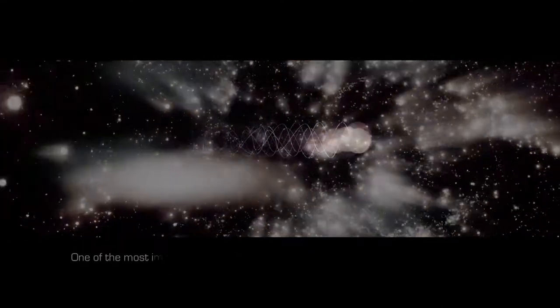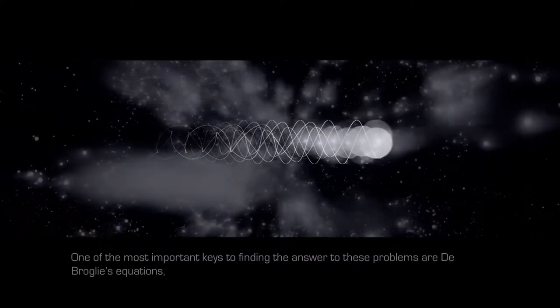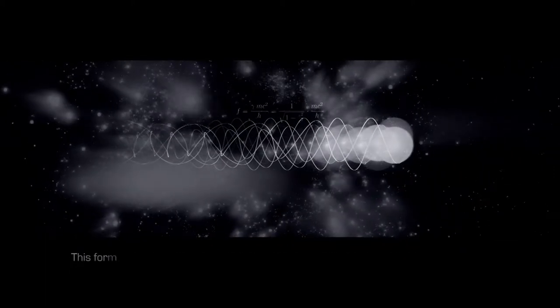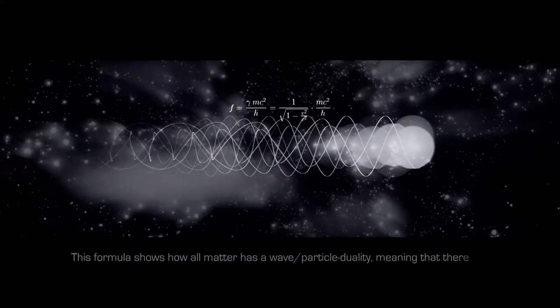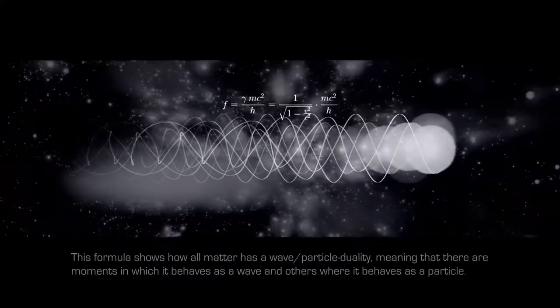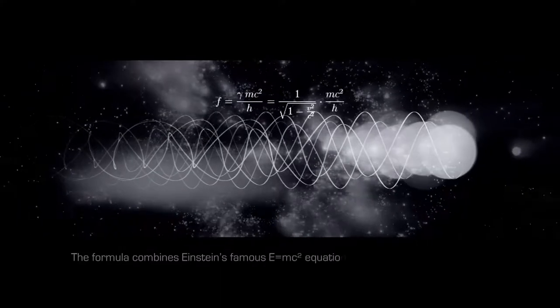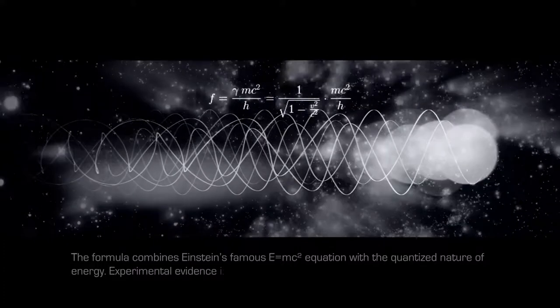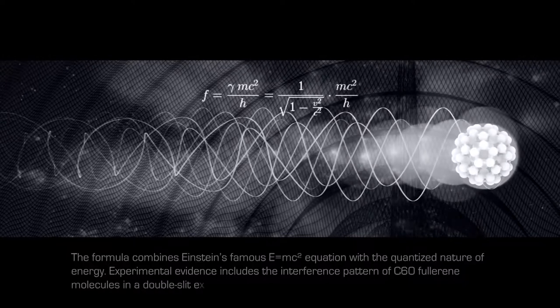One of the most important keys to finding the answer to these problems are de Broglie's equations, for which he was awarded the Nobel Prize in Physics. This formula shows how all matter has a wave-particle duality, meaning that there are moments in which it behaves as a wave, and others where it behaves as a particle. The formula combines Einstein's famous E=mc² equation with the quantized nature of energy. Experimental evidence includes the interference pattern of C60-Fullery molecules in a double-slit experiment.